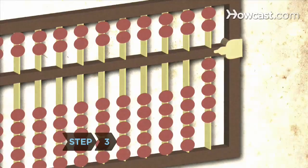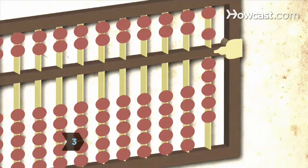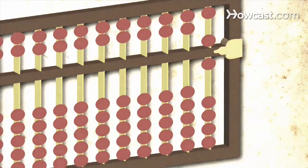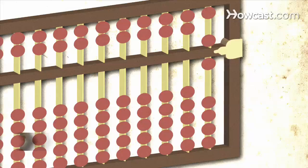Step 3. Set the 5 bead above the crossbeam in the same column when you have 5 beads in the lower section and need to add one more. Then clear 5 beads in the lower section.